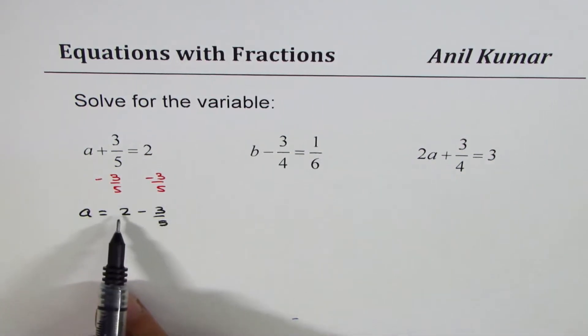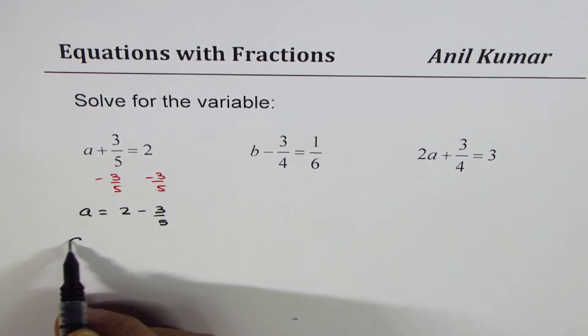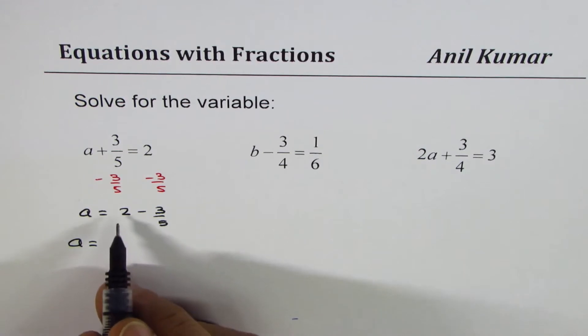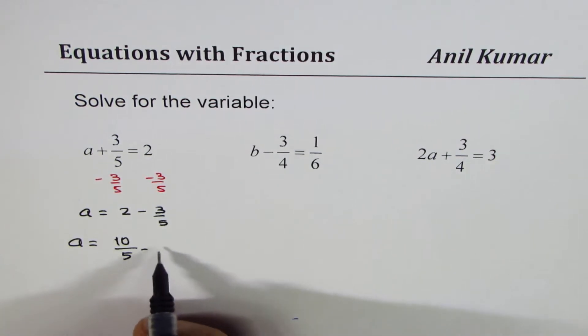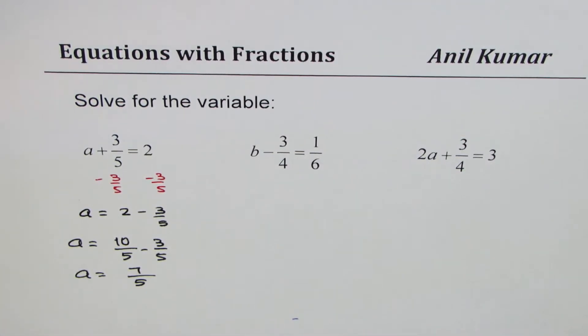Now, how to solve for 2 minus 3 over 5? We should write 2 also with the denominator of 5. So we can say a equals to, multiplying both by 5, we get 5 times 2 is 10, 10 over 5 minus 3 over 5. 10 over 5 is 2, and that gives you a as 10 minus 3, which is 7. So we get 7 over 5 as the value of a. I hope the steps are clear, right?